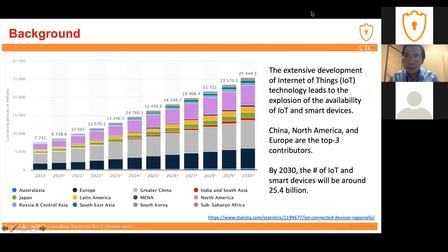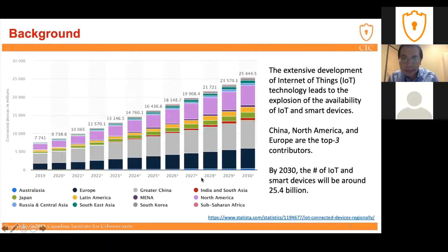First, the background. As we know, in recent years, with the extensive development of IoT technology, there has been an explosion in the availability of IoT and smart devices across the world. From this figure, we can see year by year the number of IoT devices and predictions for the future. China, North America, and Europe are the top three contributors. It is predicted that by 2030, the number of IoT and smart devices will be around 25.4 billion.